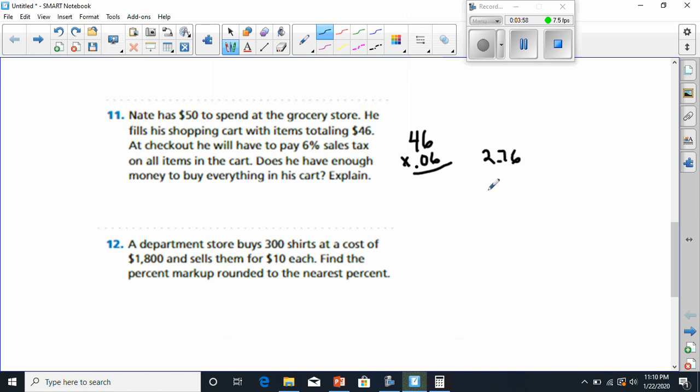Now that we know that's how much is going to increase in tax, we've got to add that to our $46 and that's going to give me $48.76. That right there told me $50 would be enough because this amount is less than $50. So the answer is yes.